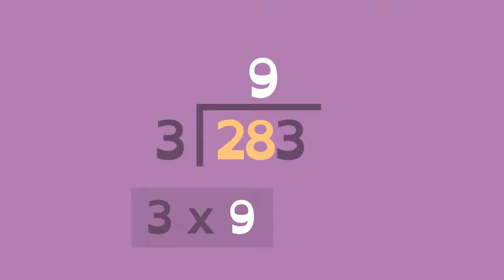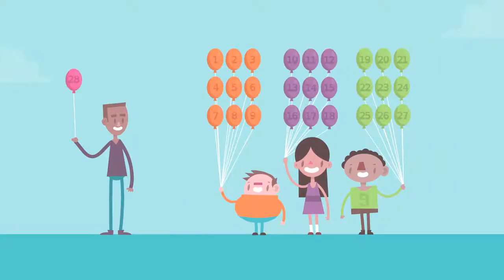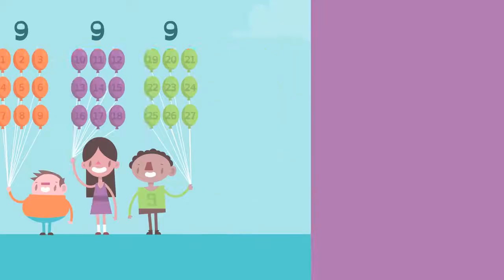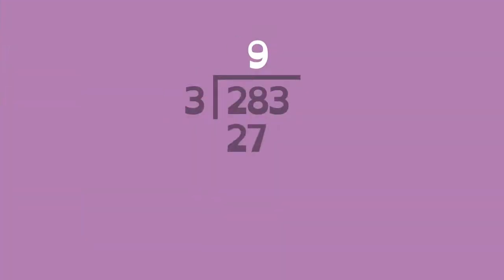3 times 9 is 27. So 28 can be split into 3 groups of 9 with 1 left over. So write 27 here and subtract to show the remainder of 1.